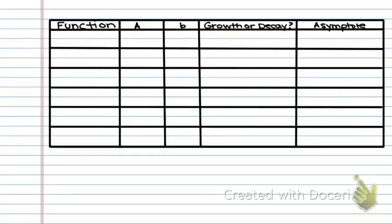We're going to do a couple of examples on how to identify if a function is growth, if it's decay, and where the asymptote is on all of these functions. So what I want you to do before we write down any examples is take a second, pause the video, and copy this grid down on your notebook paper.